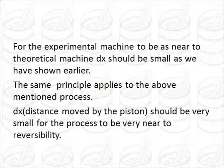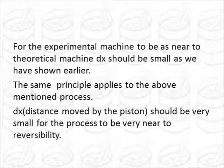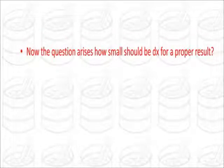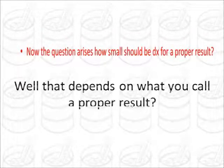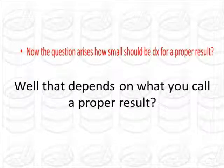Now, as we've seen earlier, that for the experimental machinery to be as near as to the theoretical machine, dx should be very small. Now the same principle applies to this problem. But here the dx is renamed. Here the dx is the distance moved by the piston. It should be very small for the process to be very near to reversibility. Well, now this thing creates one more doubt in us. How small should be dx for a proper result? Well, that depends on what you call a proper result.